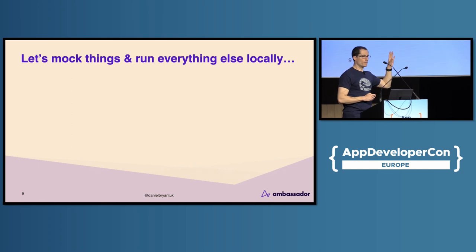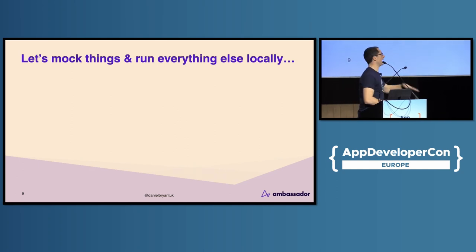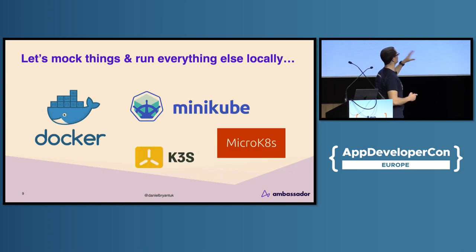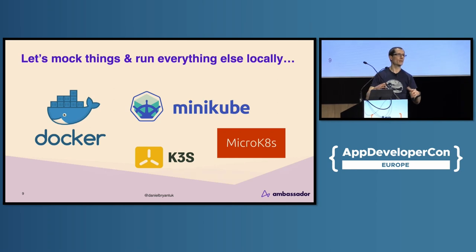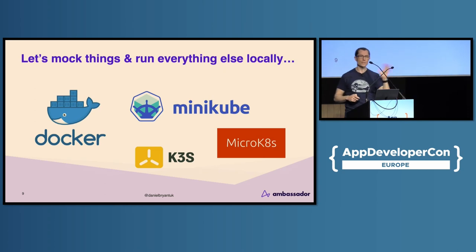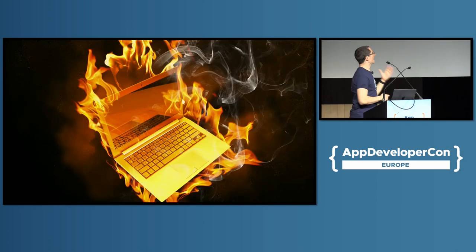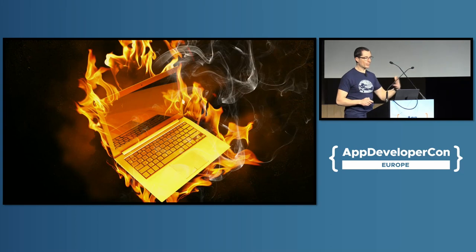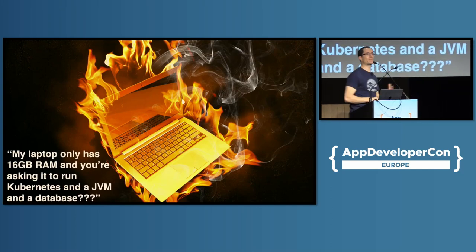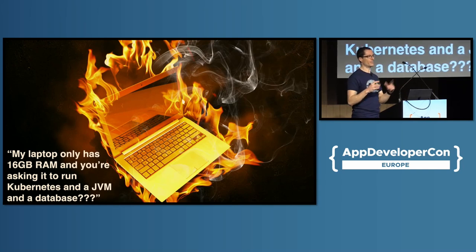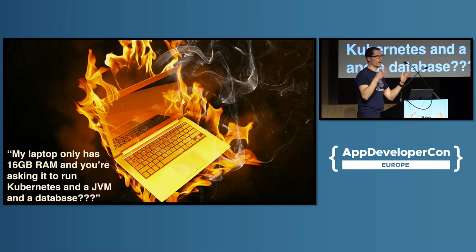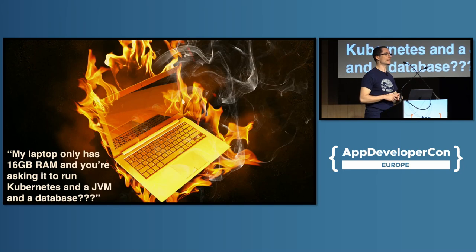A lot of us start mocking things and then running as much as we can locally. This works — pick your poison for how you want to run things locally. You can get quite far installing things on your machine. Not every developer is happy installing Docker and running Docker, but you can get pretty far. Coming from the JVM world, after we get a certain number of services this becomes quite tricky. For Go and other services you can get a bit further — perhaps 5 to 10 services — but you can't run everything on your machine at some point.